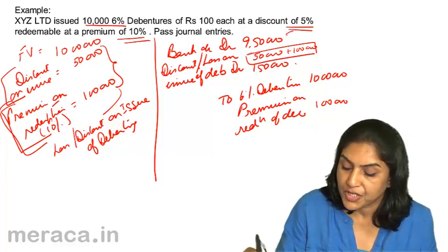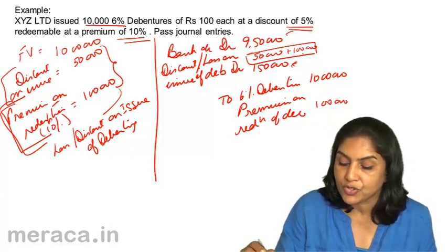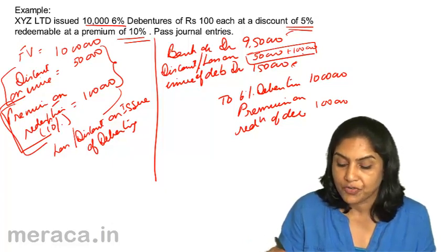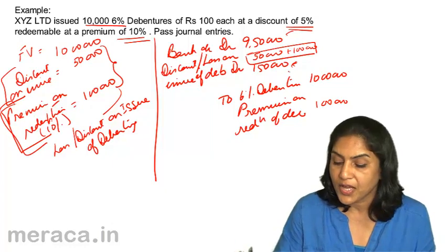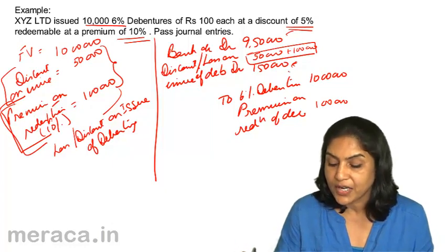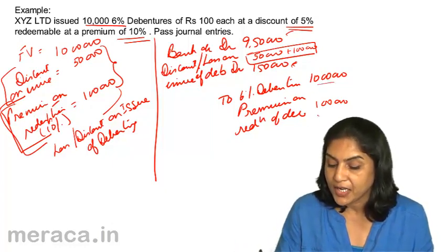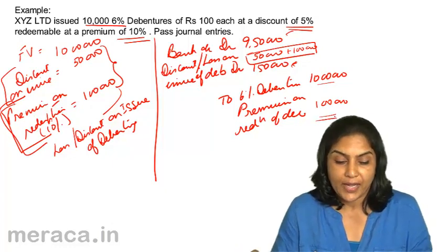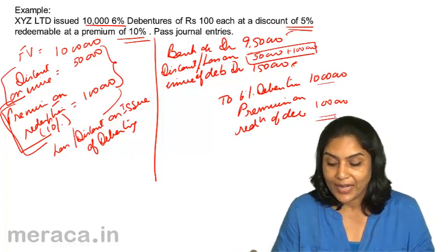So on the debit side: bank account Rs.9,50,000 and discount or loss on issue of debentures account Rs.1,50,000. On the credit side: to 6% debentures Rs.10,00,000 and to premium on redemption of debentures Rs.1,00,000.